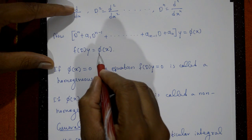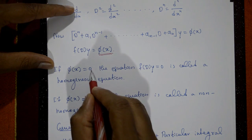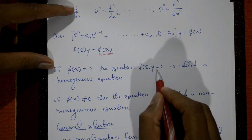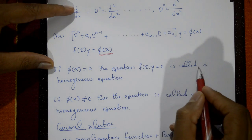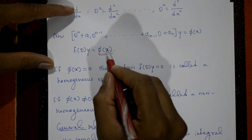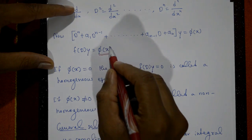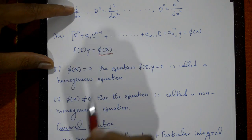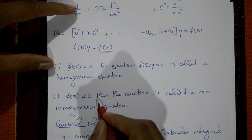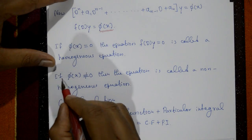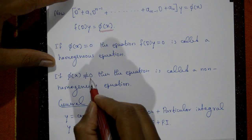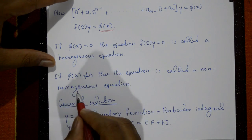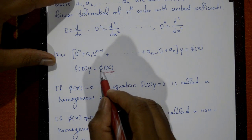Now, homogeneous and non-homogeneous: if phi of x is equal to zero, meaning the right-hand side equals zero, the equation f(D) y equals zero is called a homogeneous equation. If phi of x is not equal to zero, then the equation is called a non-homogeneous equation.